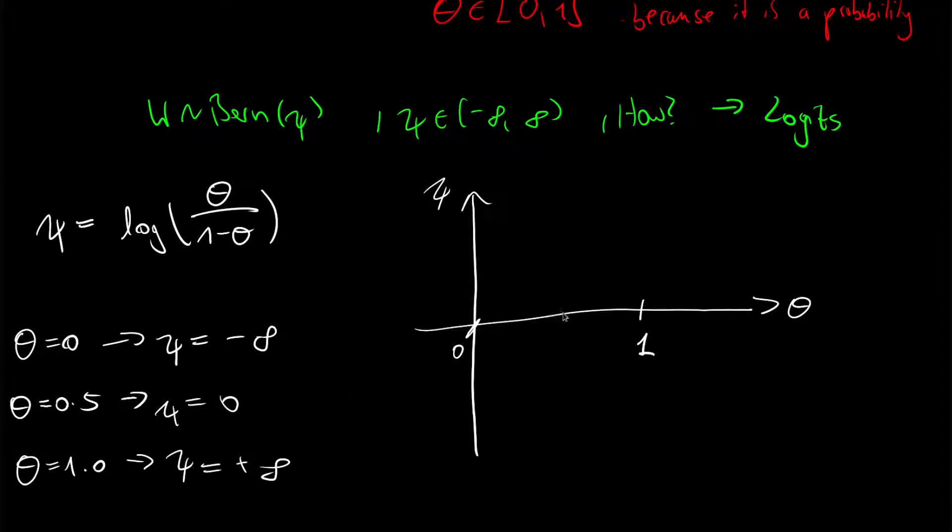We know at theta equals 0.5, our psi is going through the x-axis, and towards 1 it's going to plus infinity and towards 0 it's going to minus infinity. So we might have a function that looks like this.